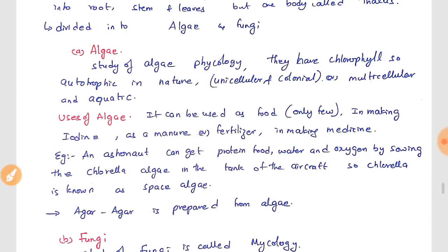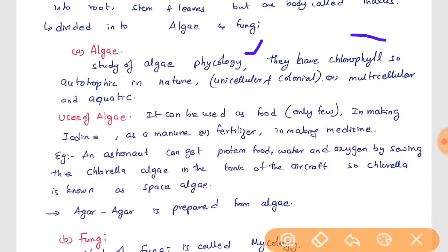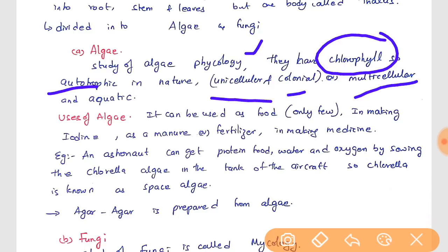The study of algae is called phycology. Algae have chlorophyll, which means they are autotrophic — they have the capability to produce their own food. Algae are unicellular and colonial in nature, meaning they come in groups, but they can also be multicellular. They are aquatic in nature.